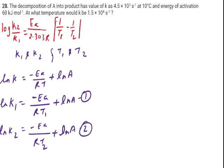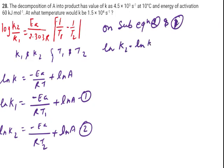Now what I need to do? On subtracting equation 1 and 2. So actually I am subtracting the equation from 2 to 1. So this becomes lnK2 minus lnK1 equals to minus Ea upon RT1 plus lnA. Now I am going to subtract this one. So the negative become positive and positive become negative.